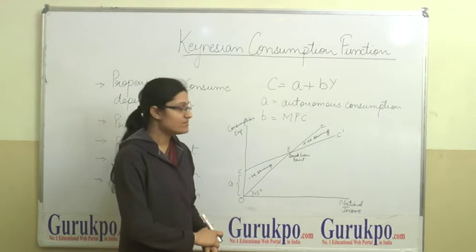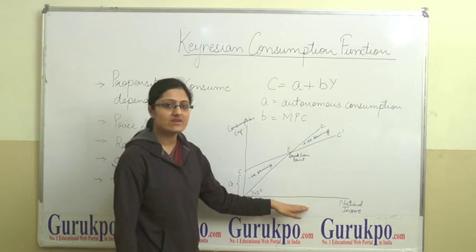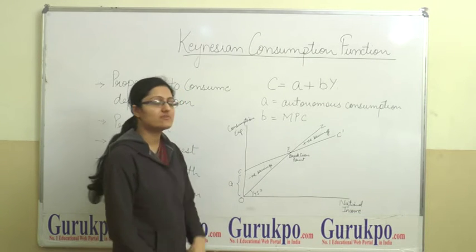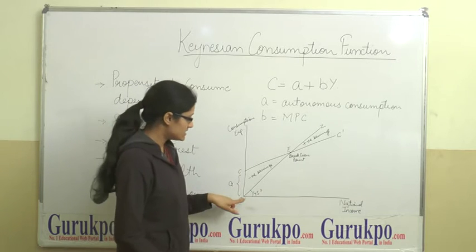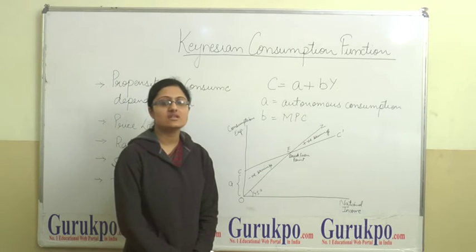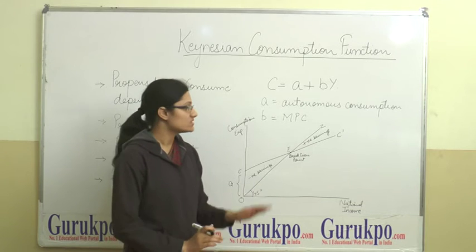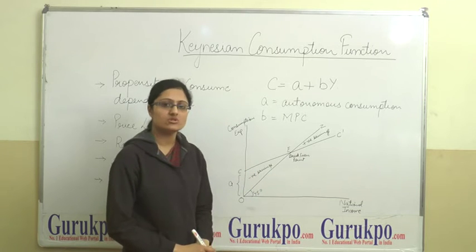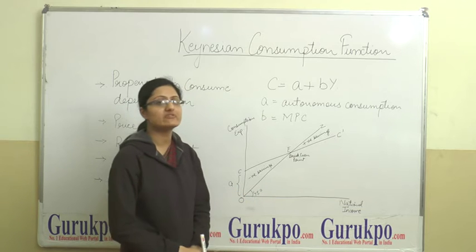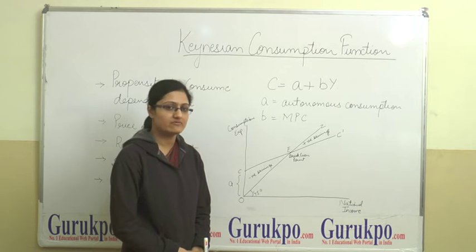Here is our consumption function diagram. On X axis we have national income and Y axis we have consumption expenditure. This is OZ line which is the line of equality. That is any point on this line is equidistant from both the axes because this line is at 45 degree.